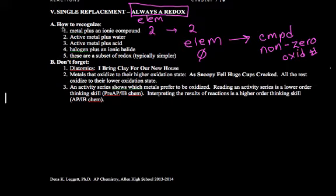There's four different types: metals plus ionic, active metal plus water, active metal plus acid, and a halogen plus an ionic halide.